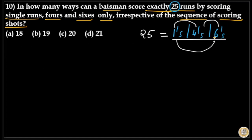I will use the number of sixes to find out the number of ways to score 25 runs. This batsman should score 25 runs, and the maximum number of sixes he can score is four, because 6 times 4 is 24. So I will take the number of sixes as the cases.